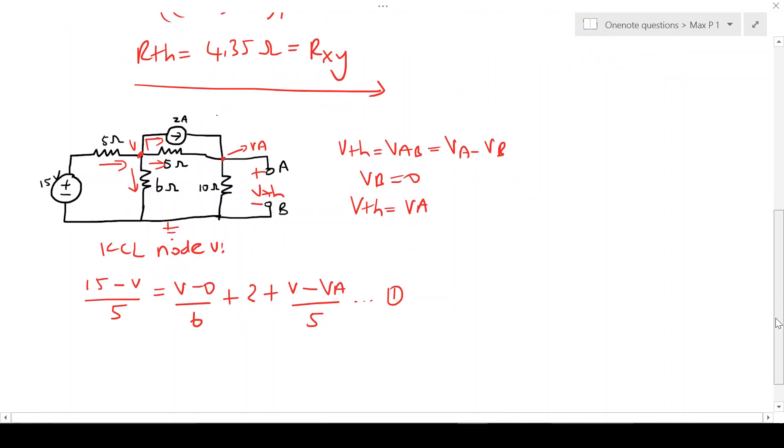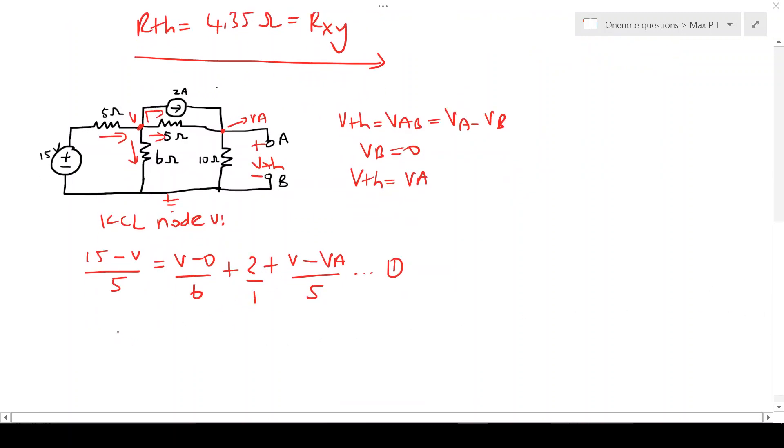Let's simplify this expression. Common factor of 30. So 90 minus 6V equals 5V plus 60 plus 6V minus 6VA. If we further simplify this we're going to have 30 equals 17V minus 6VA.